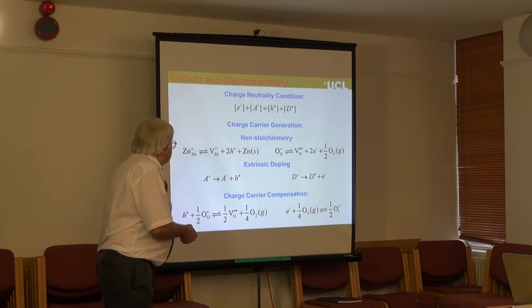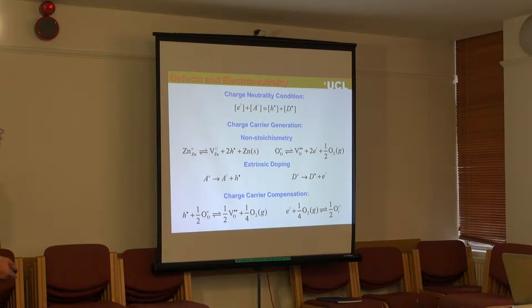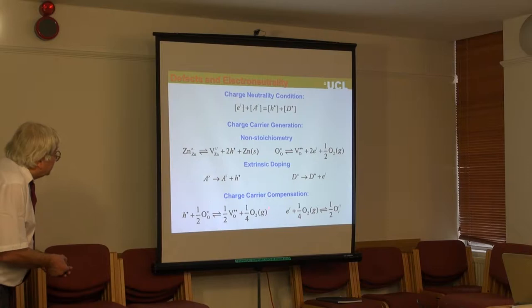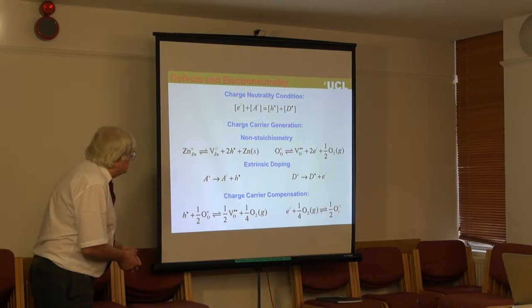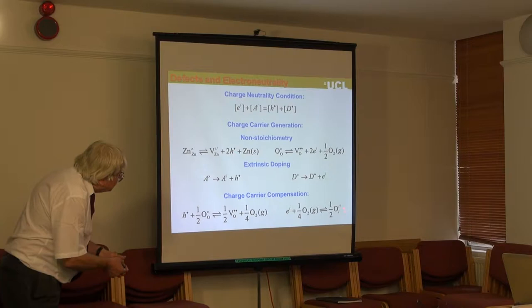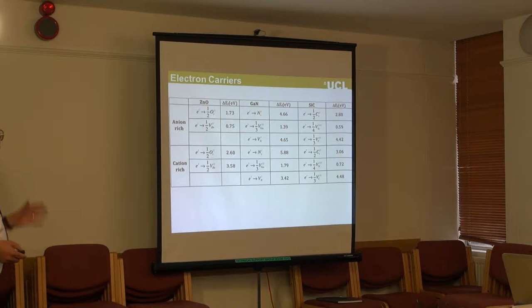If we take zinc oxide and do acceptor doping — which we might expect to give hole compensation — we have to bear in mind there's an equilibrium between a system containing holes and one containing oxygen vacancies. It's essentially a redox reaction. This simple piece of solid-state chemical thermodynamics has not been terribly well appreciated. Similarly, for donor doping to create electrons, we can have a redox equilibrium in which electrons are replaced by oxygen interstitials.